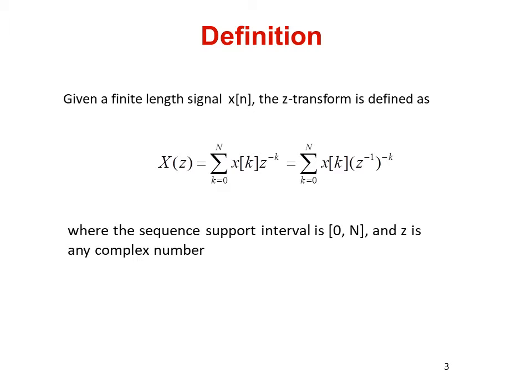Now we will look at the definition of the Z-transform. Given a finite length signal x[n], the Z-transform is defined as X(z) equals summation over n of x[k] times z to the power minus k. That is also equal to summation over n of x[k] times z inverse raised to the power minus k. Where the sequence support interval is 0 to N and z is any complex number. This transformation produces a new representation of x[n] denoted by X(z).